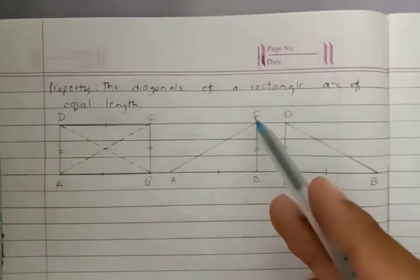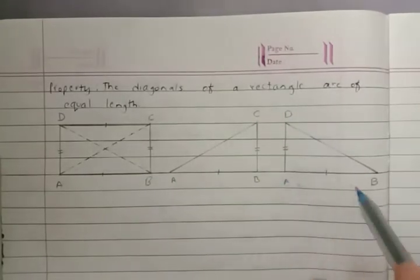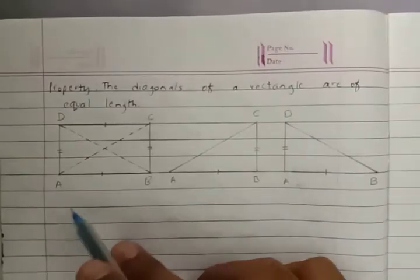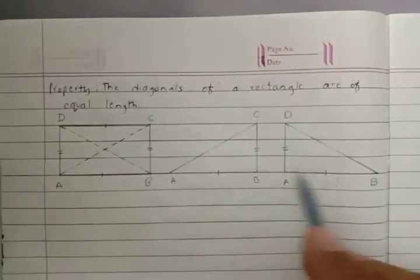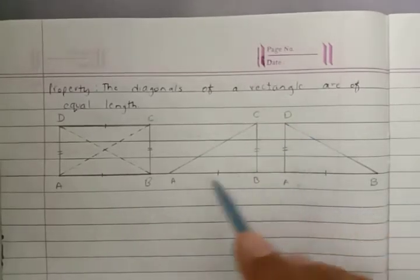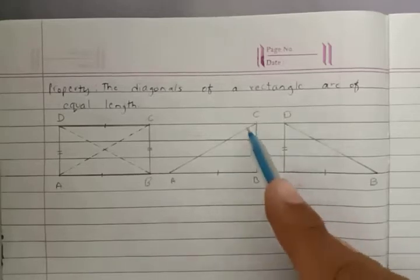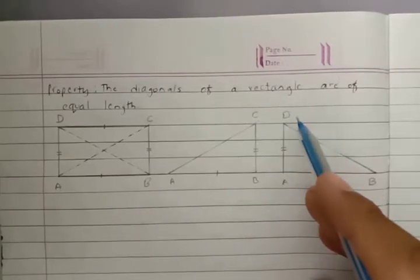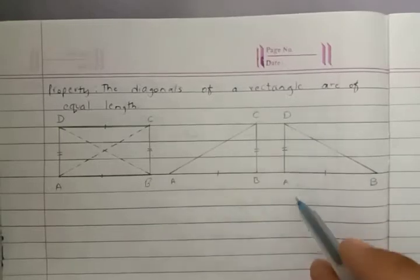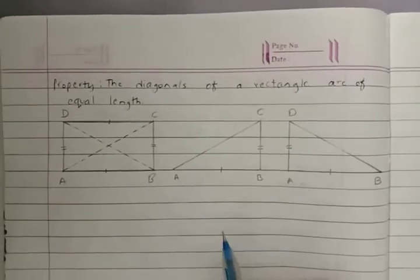Triangle ABC and triangle DAB share side AB in common. Side CB is equal to side DA, meaning this length is equal to this length. So now I will start solving.